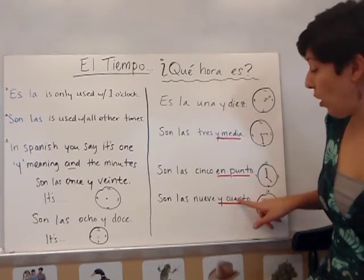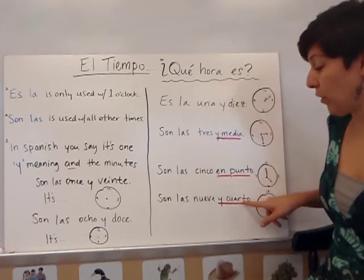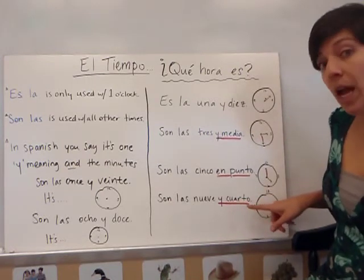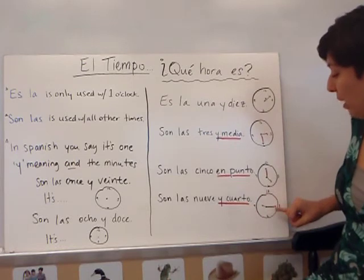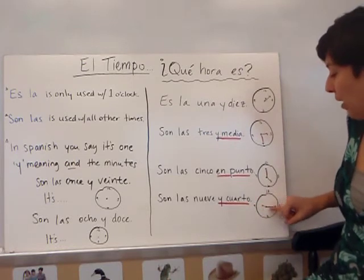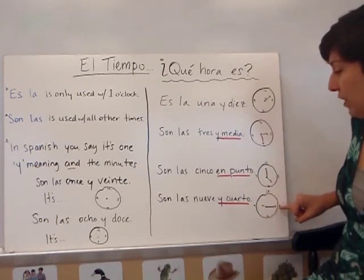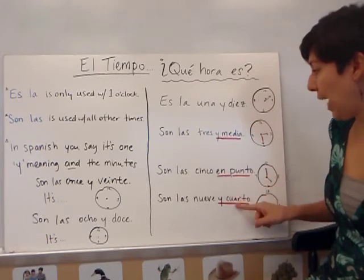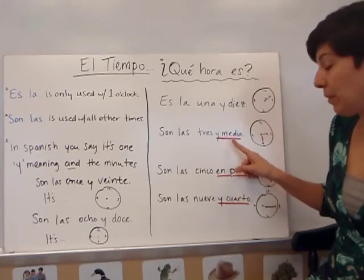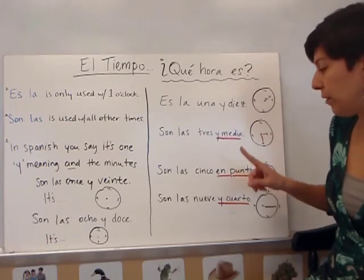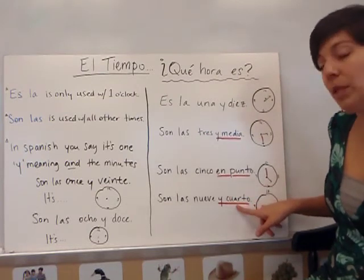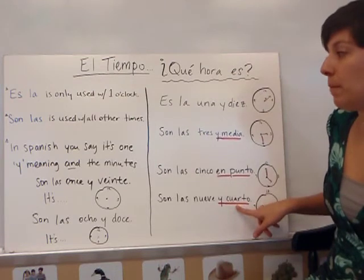Notice it's not 'cuatro' — the R and the T are reversed. It doesn't mean four, it means a quarter. And a quarter of an hour is 15 minutes, so here we have 9:15. You need to make sure you add these words to your vocabulary: y media means 'and half,' en punto means 'on the dot,' and y cuarto means 'and a quarter,' which is 15 minutes.